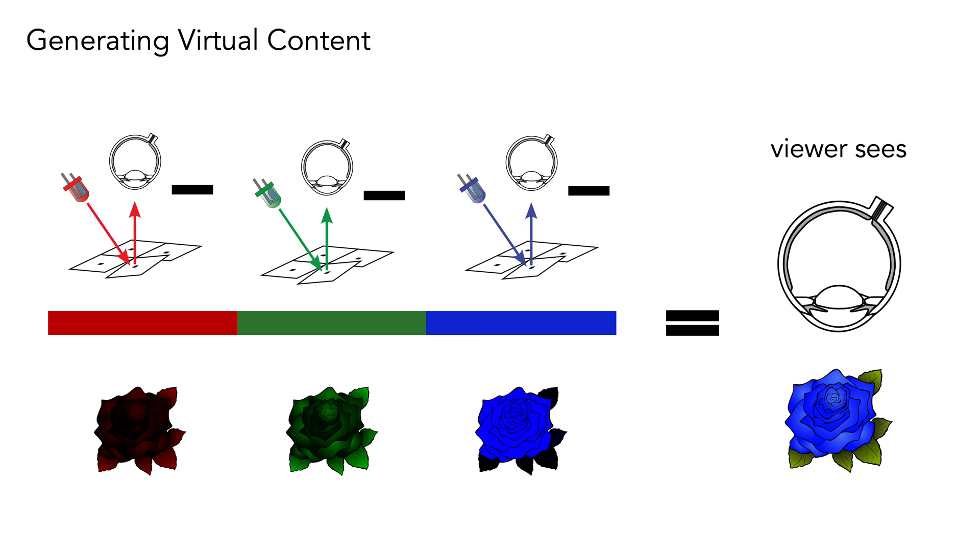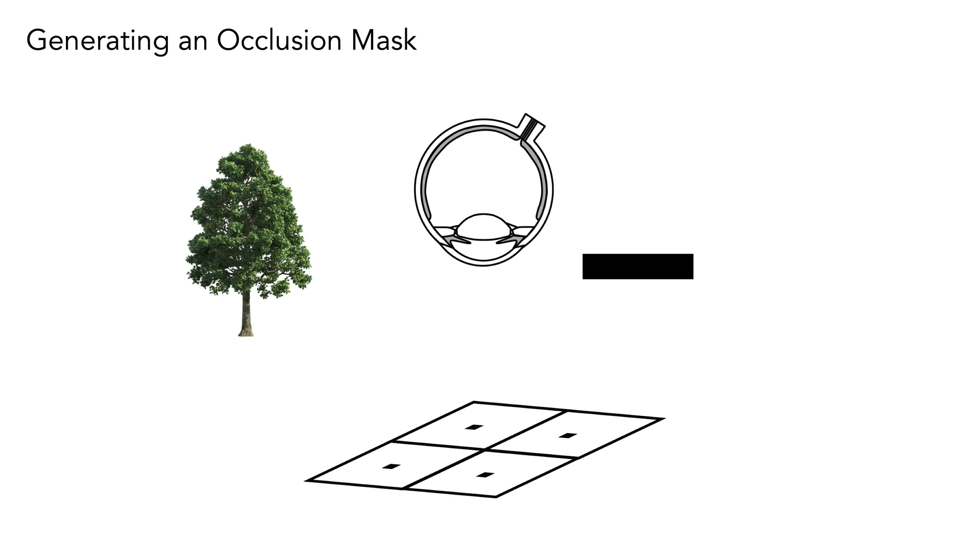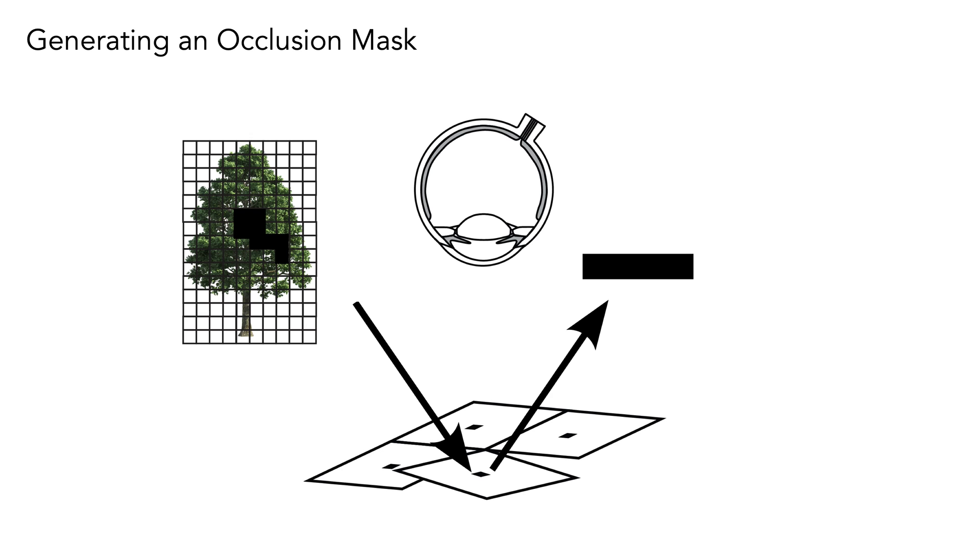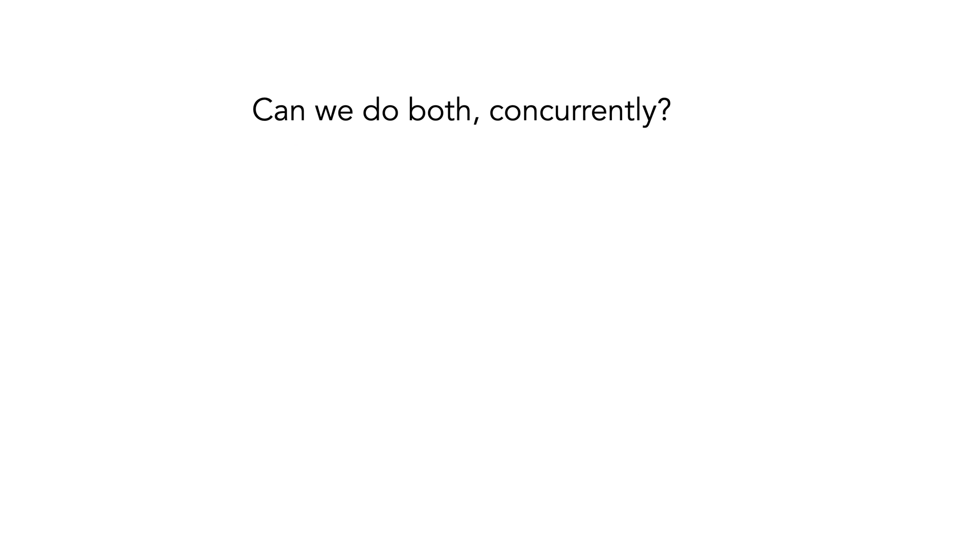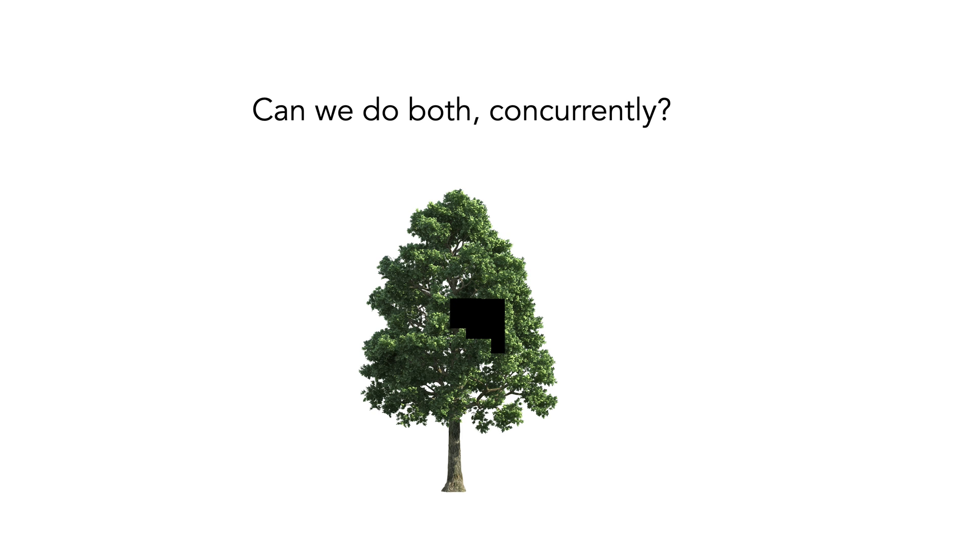We can also easily see how a DMD can be used to generate an occlusion mask on a real scene. Those pixels can just be indefinitely switched to the off-state, blocking light from that scene. In this work, we try to do both at the same time. Can we effectively block light coming from the real tree and render this virtual flower in its place?